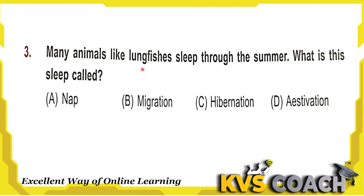Next question: many animals like lungfishes sleep through the summer — what is this sleep called? Option A is nap, which is a short period of sleep. Option B is migration, which is movement from one country to another. Option C is hibernation, a deep sleep that helps them save energy and survive winter without eating much. Option D is estivation — it is the reverse of hibernation; hibernation occurs in winter and estivation is sleep through the summer.